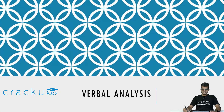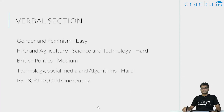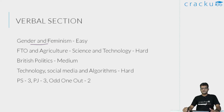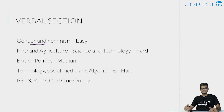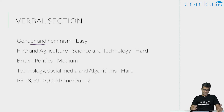Let us first look at the verbal section. The verbal section had four RCs. The first RC was on Gender and Feminism. This was slightly on the easier side — it was an easy read and had themes relevant in the current day, including current affairs. Somebody following the cultural wars between the right and the left, especially in the United States, would find this an easy read. As expected, many people got most of the questions correct in this RC.